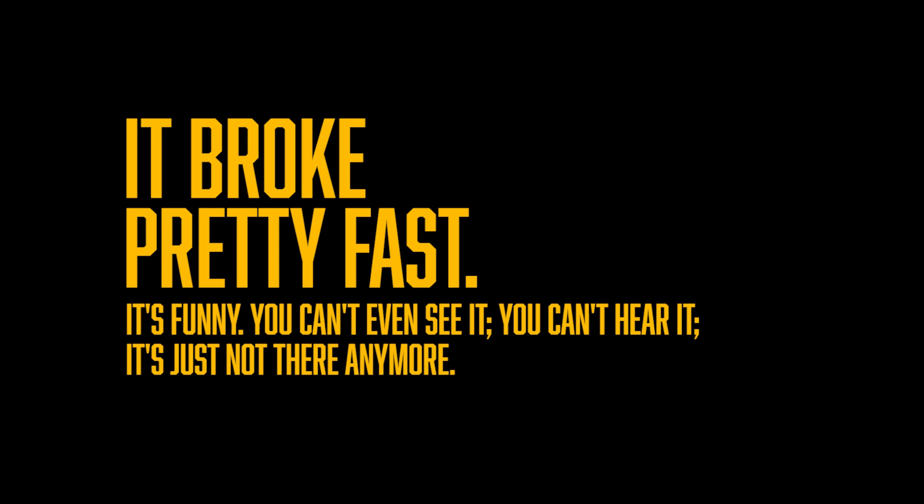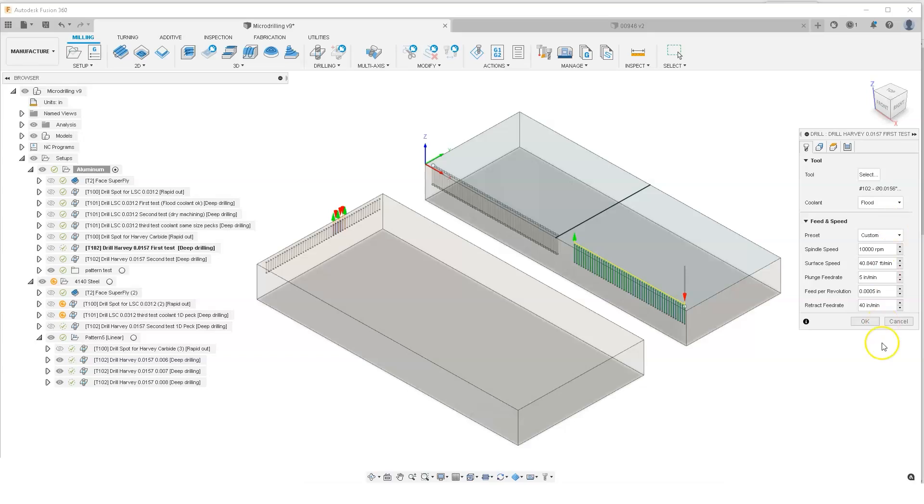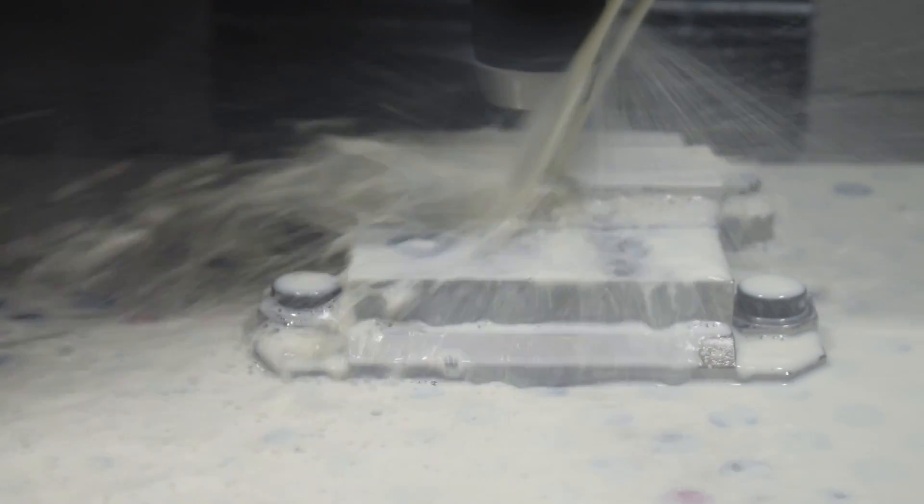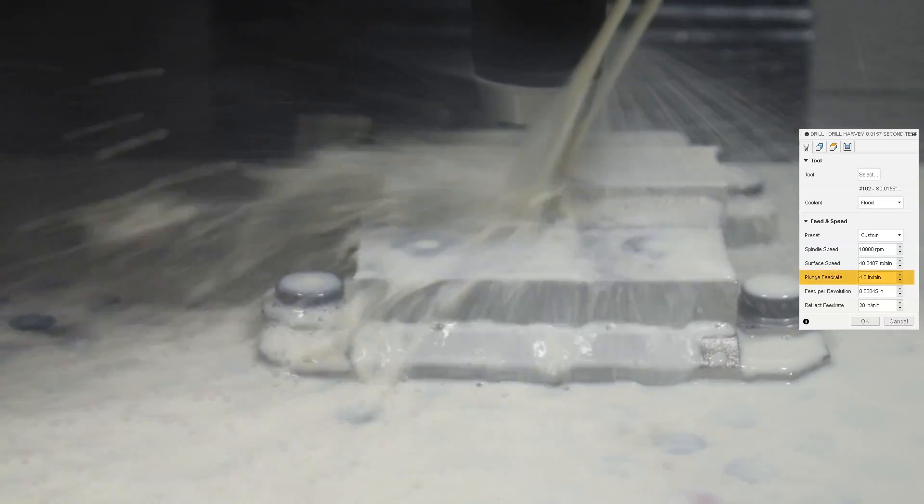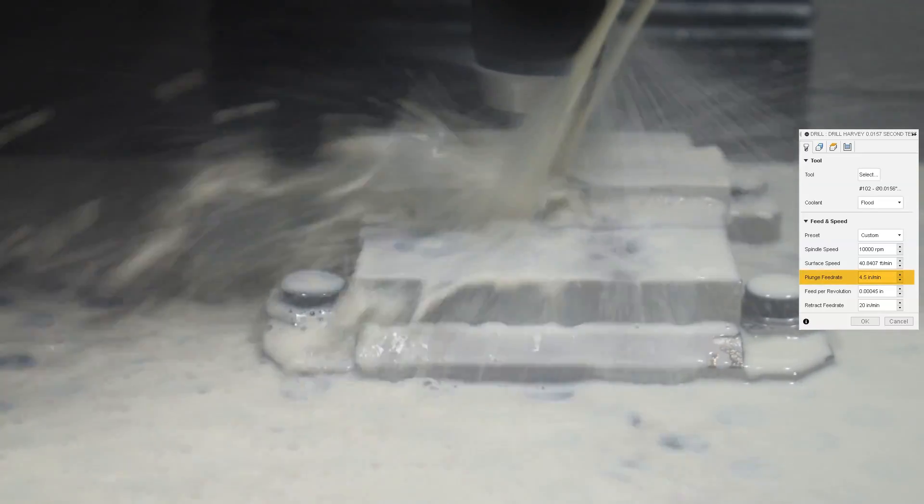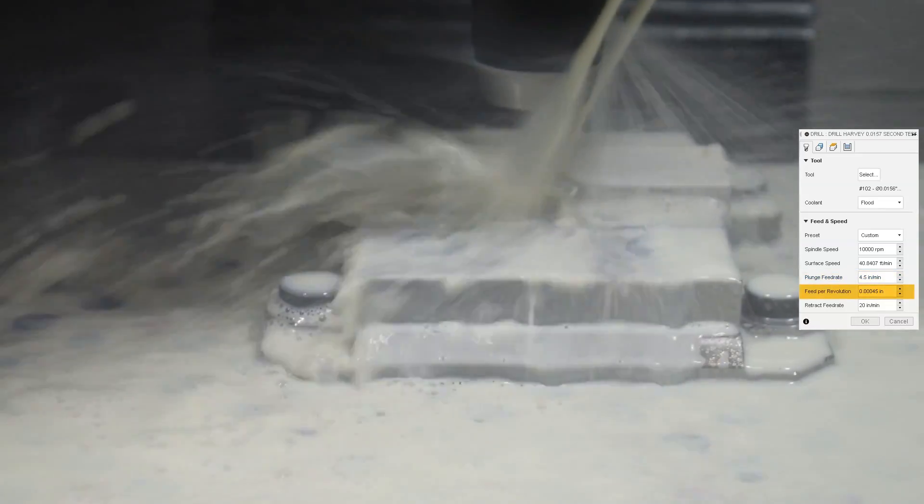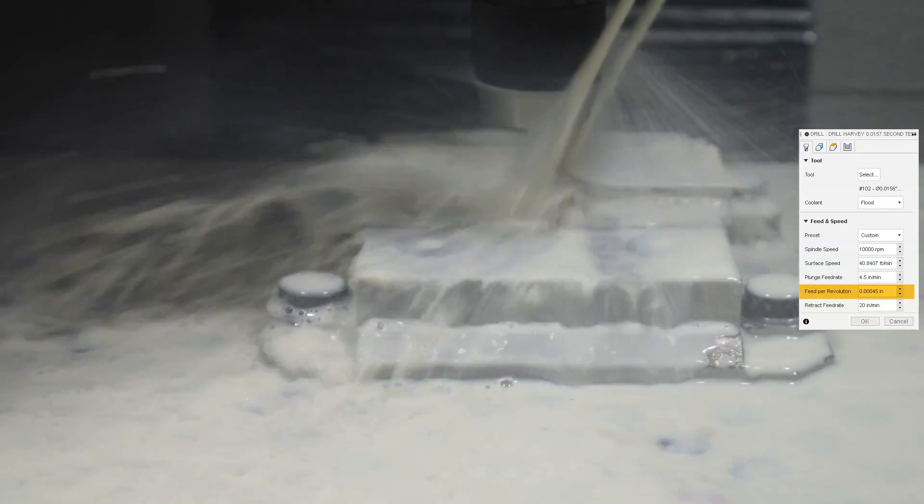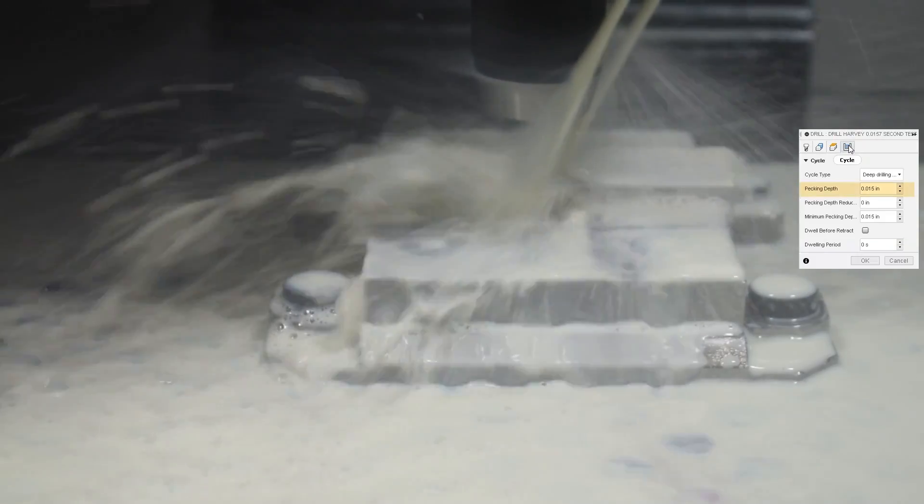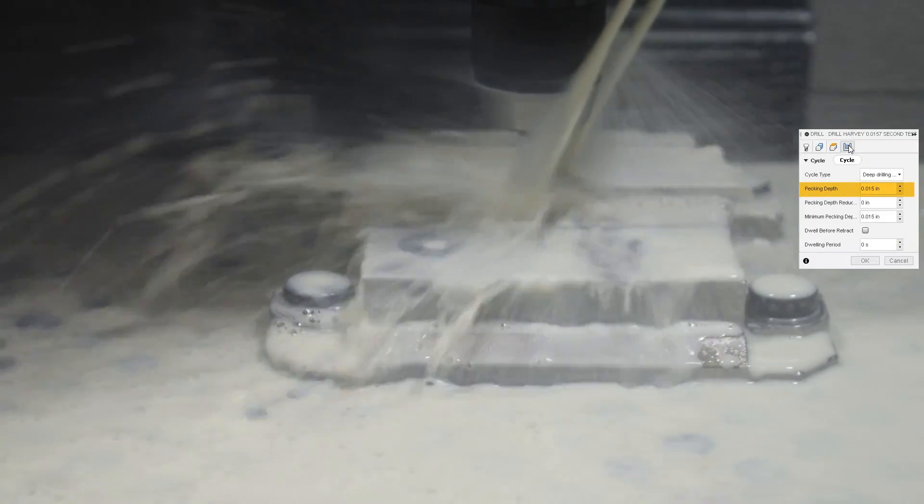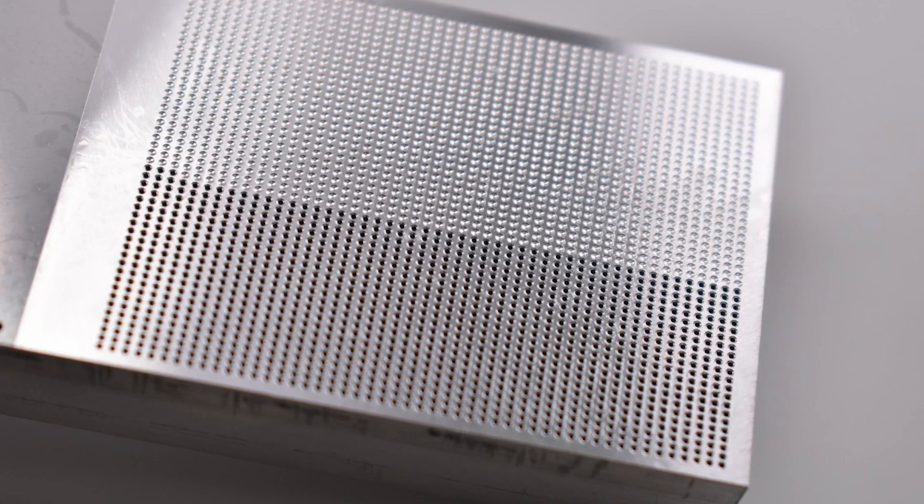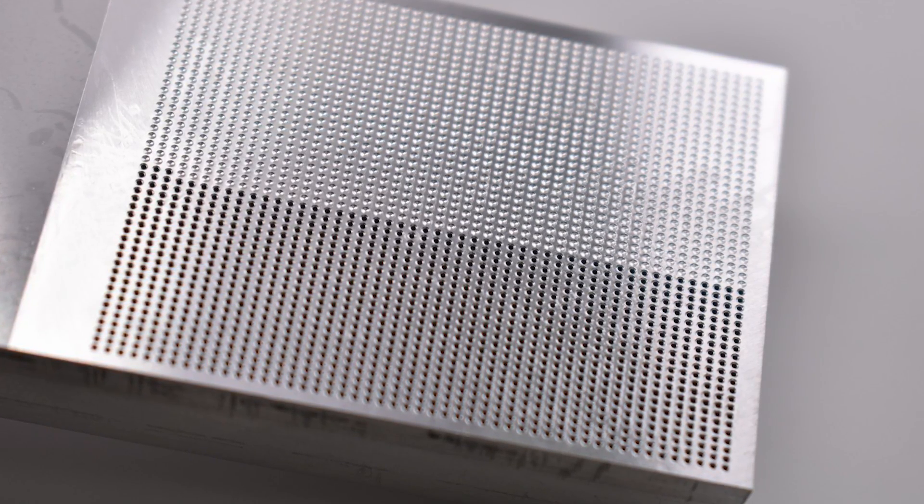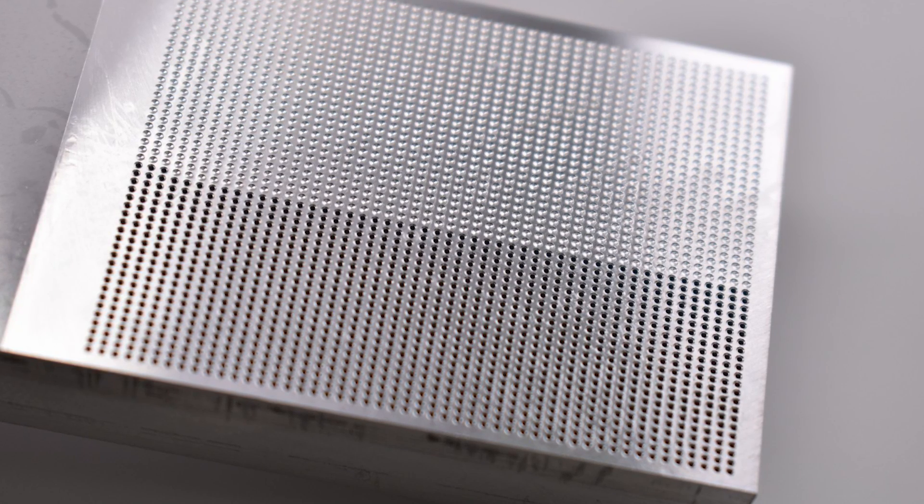It's just not there anymore. Alas I had more tools so it was time to go again. The second test I lowered the plunge a little bit to 4.5 inches per minute for a feed per rev of 0.00045 and my pecking depth is pretty much one times the diameter of the tool. And that ran great. Ran beautifully to a depth of quarter inch which is amazing for a tool that size.